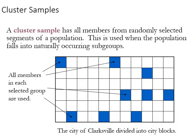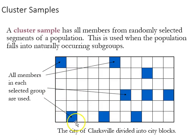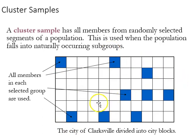Another method of sampling is cluster sampling. Here we randomly select from naturally occurring subgroups. You could imagine this as a map of neighborhoods, and this would involve perhaps a two-level approach to sampling where we would first randomly sample neighborhoods, and then, if there are a lot of houses in each neighborhood, we would then randomly select houses on each street. That would provide one way of randomizing our sampling.